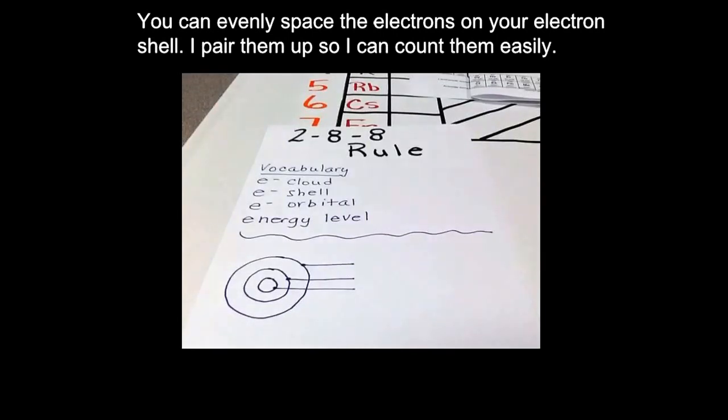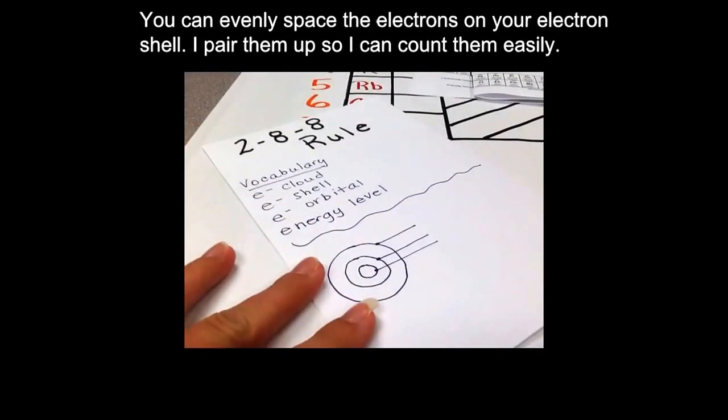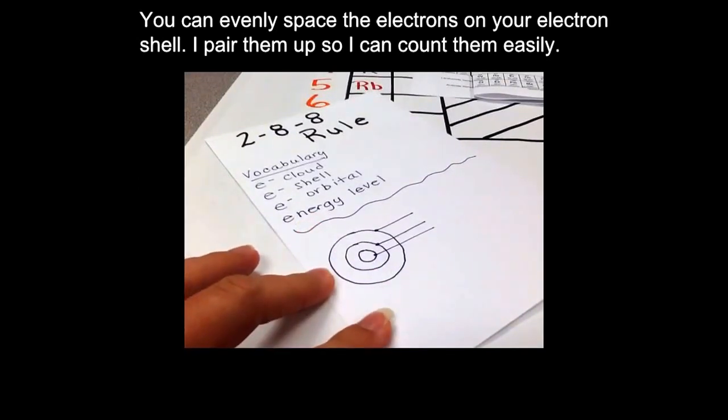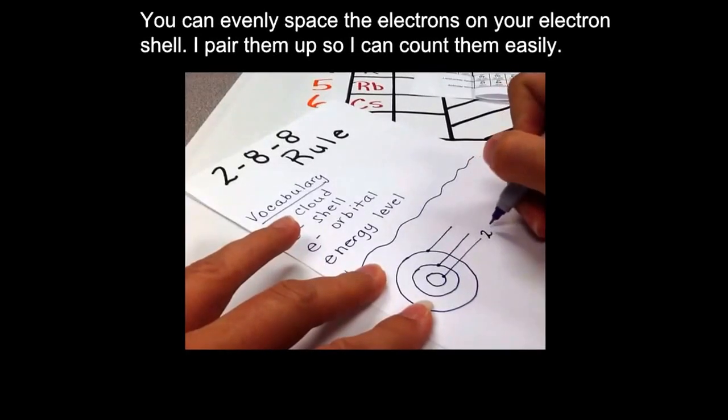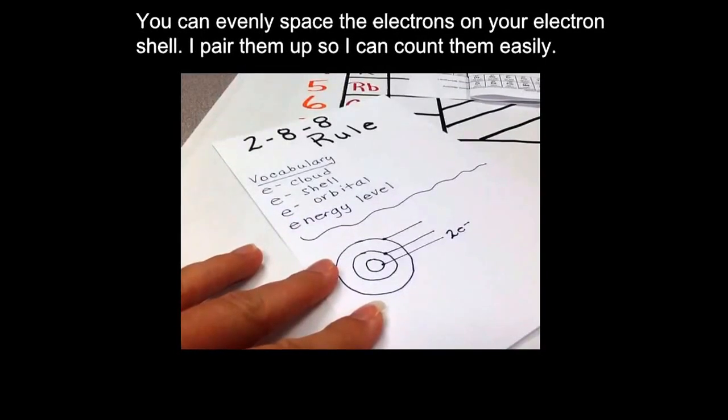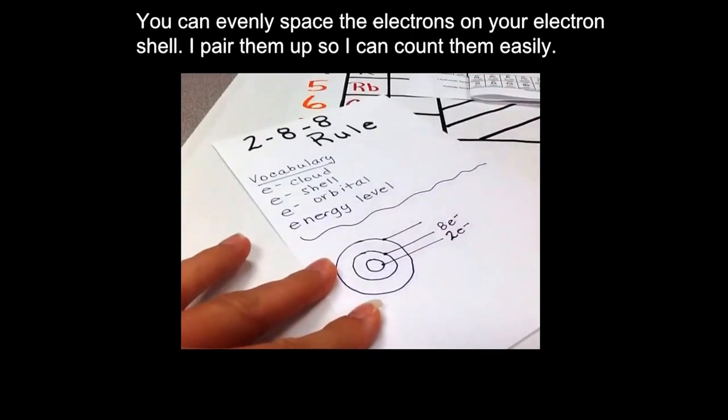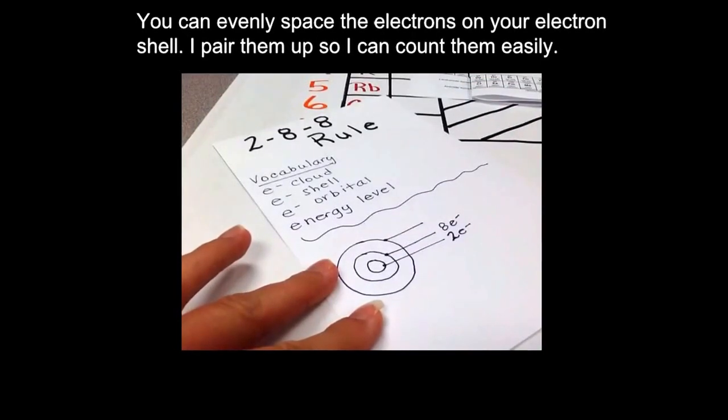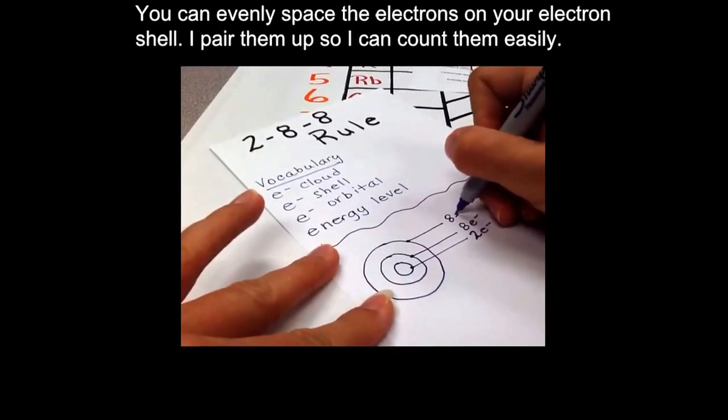So the 2-8-8 rule. Basically, if we have a Bohr diagram like this, then we need to know that the first energy level, which is closest to the nucleus, can only hold two electrons. The second energy level can hold eight electrons, and when it is full, then you must go to the third energy level, which can hold eight electrons.